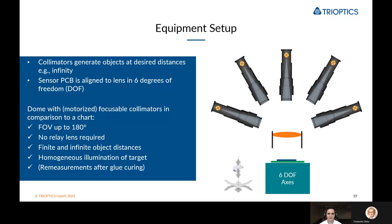Using an AA dome — as seen in this example with optionally motorized focusable collimators — compared to a chart, we can cover a field of view of up to 180 degrees, no relay lens is required, and we can generate objects at finite or infinite distances. These distances can also be freely adjusted, making the system very flexible. The targets we generate are homogeneously illuminated, and using motorized collimators we can also run re-measurements after glue curing.